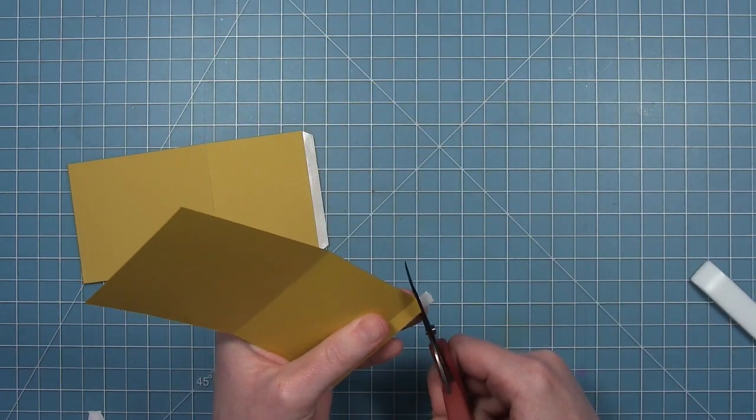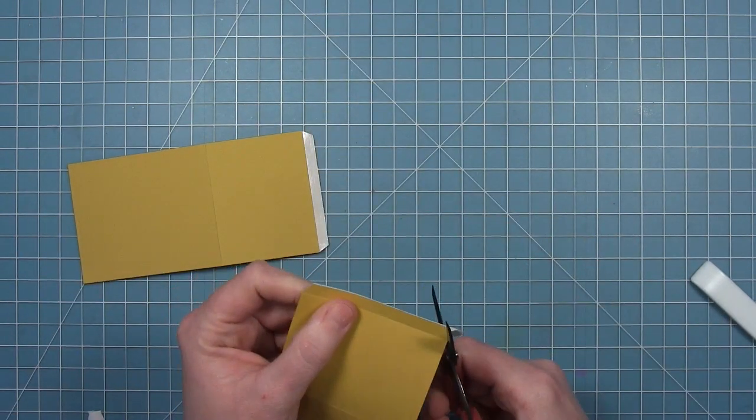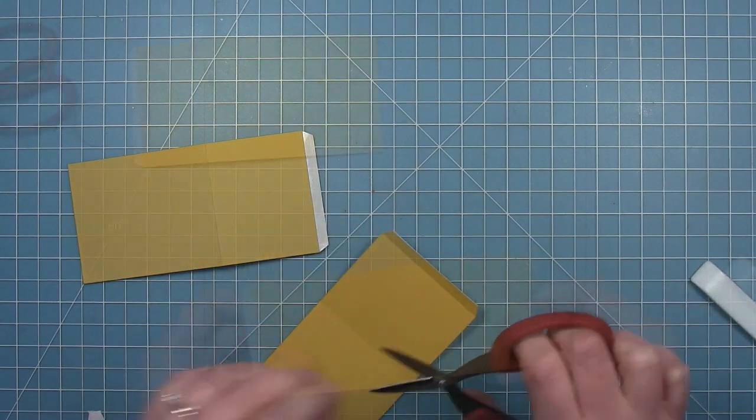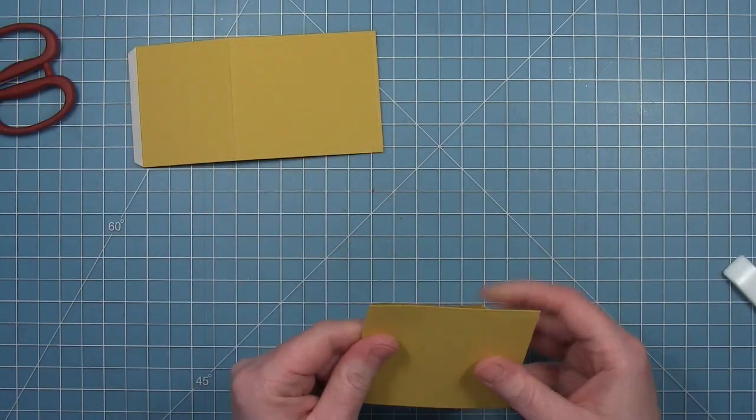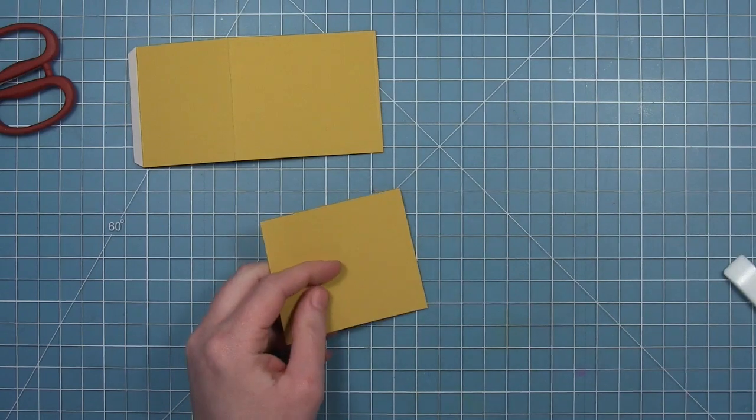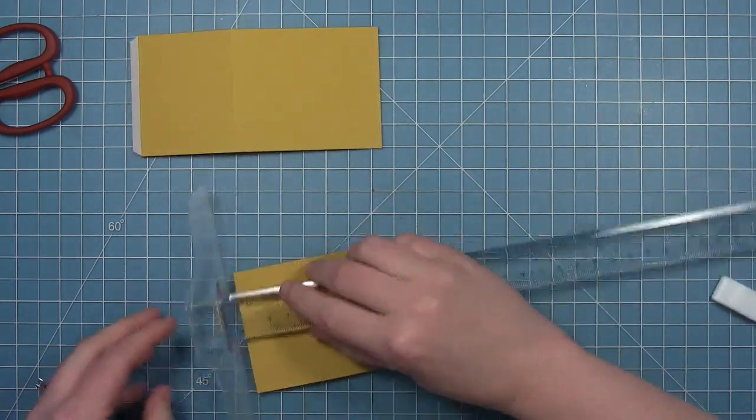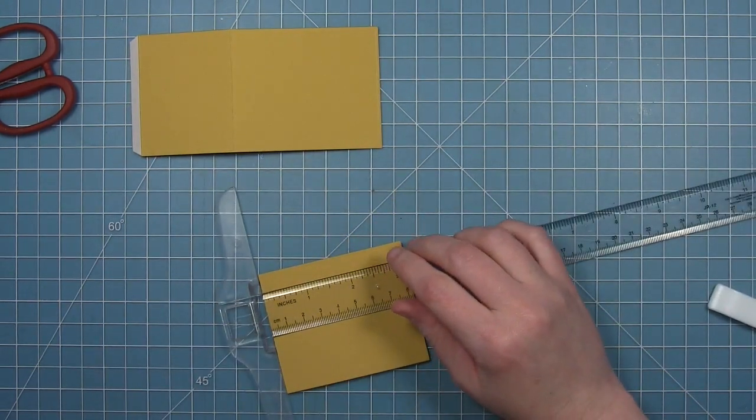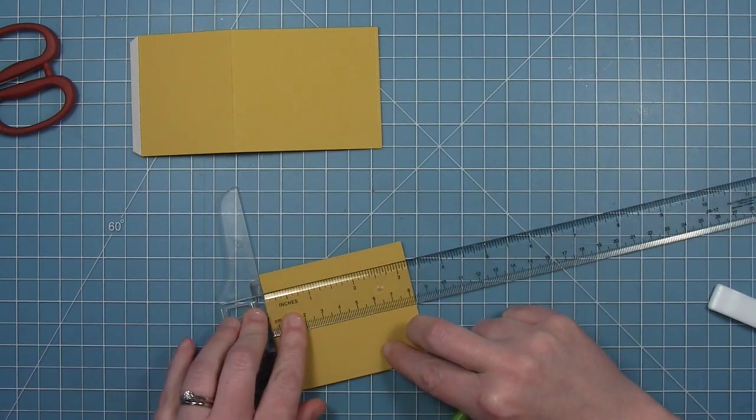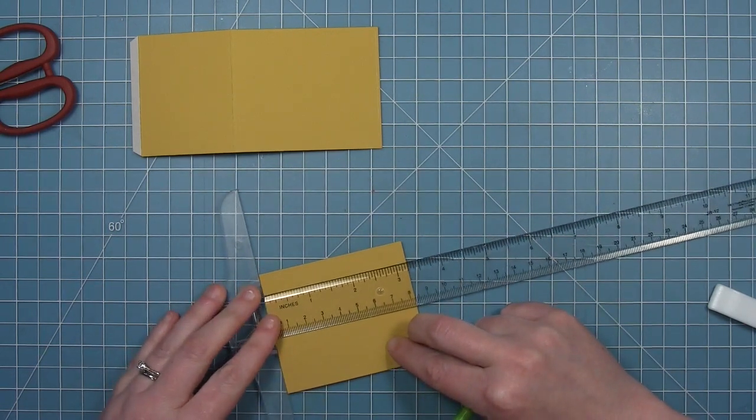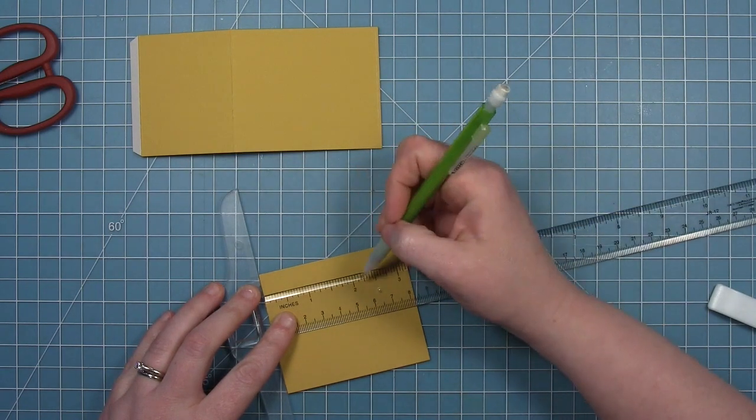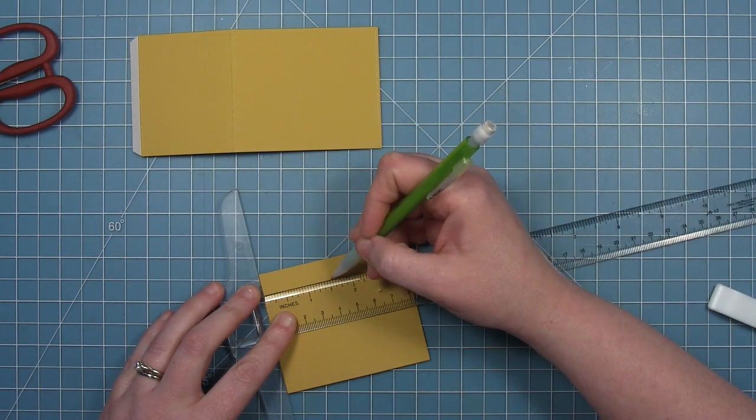Now I wanted to cut an arched shape in the front of this card, and I want to make sure that's centered in the front. So right now I'm finding where the center of that front panel is, and I'm just going to mark it with my pencil.